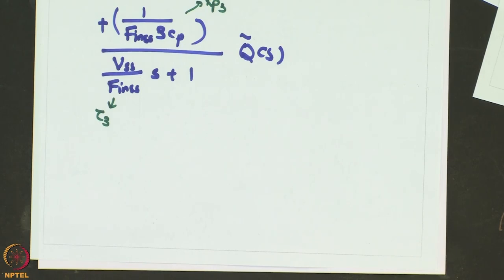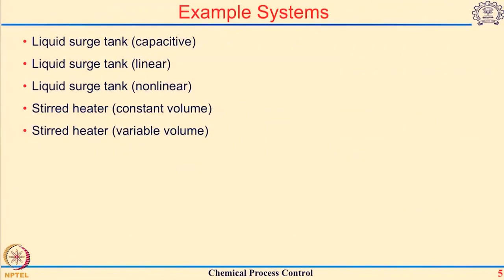This is the final form of the transfer function for outlet temperature T(s), and we can see it is a summation of three effects: Kp1/(τ1 s + 1) from F_in, Kp2/(τ2 s + 1) from inlet temperature T_i, and Kp3/(τ3 s + 1) from heat duty Q. It is a summation of three first-order capacities corresponding to the three input variables. We have seen these five examples where the relationship between output and different inputs follows first-order dynamics.